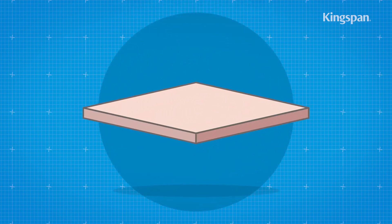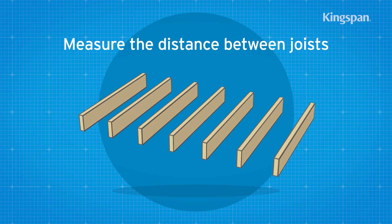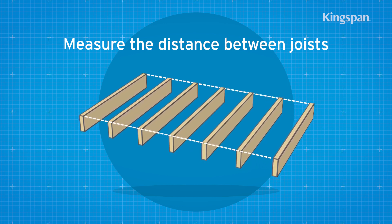The insulation boards should be cut to fit snugly between the floor joists. It's advised that you measure the distance between joists prior to cutting the board as spacings can vary.